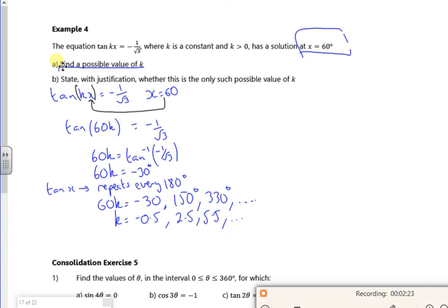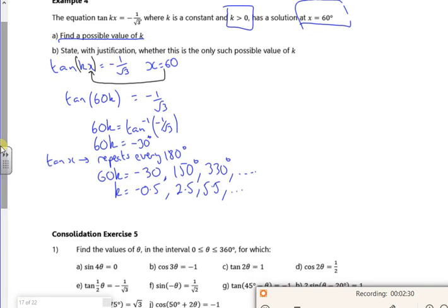Now the question says, where k is a constant, k is greater than 0, find a possible value for k. So there might be more than one. But if I choose a positive value, so as k is greater than 0, I'm going to say that my k value is 2.5. There. And that kind of gets me that.